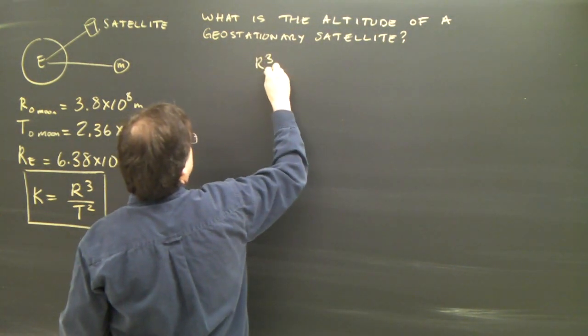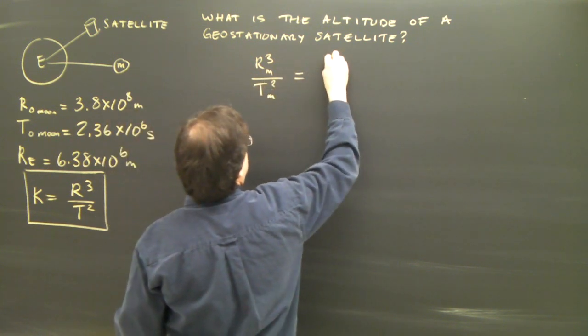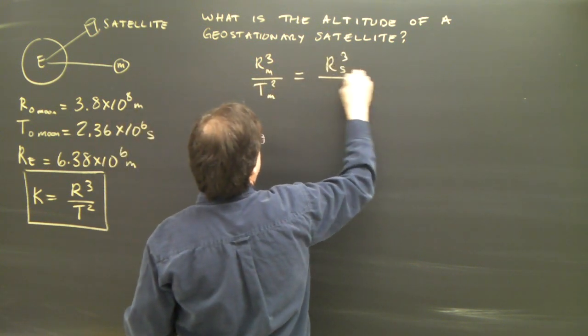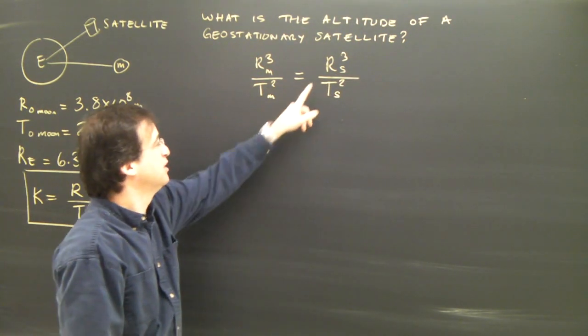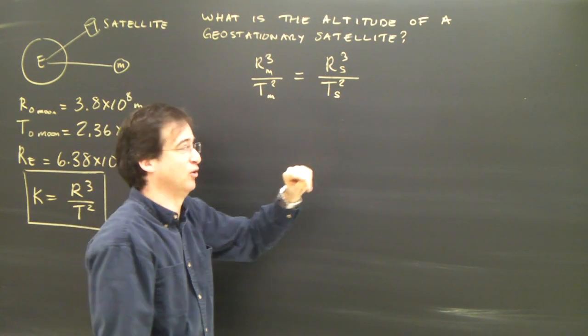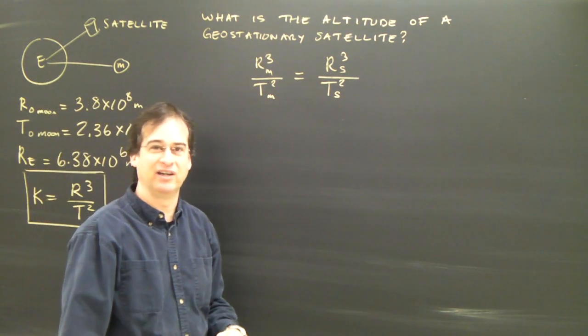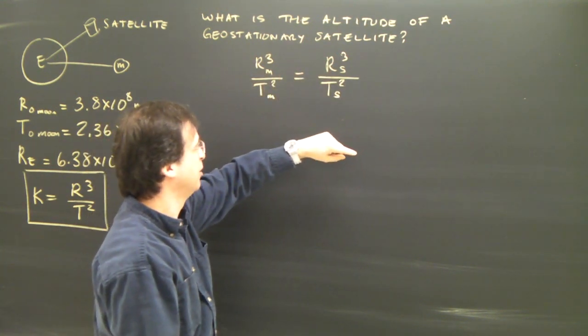We're going to say r cubed for the moon over t squared for the moon is equal to r cubed of the satellite over t squared of the satellite. And what we're going to be able to do is solve for the distance to the satellite from the center of the Earth. And then what we've got to do is subtract the radius of the Earth to find out what the altitude is.